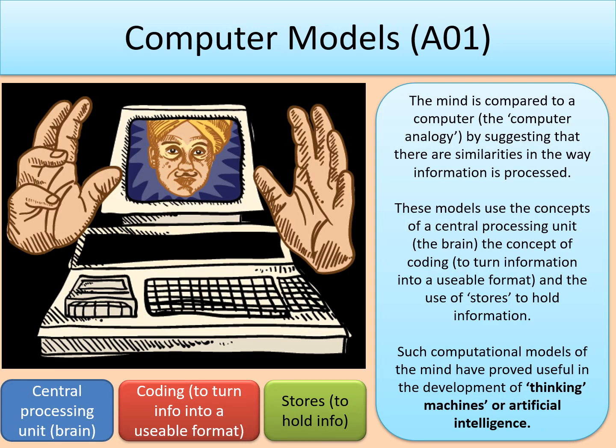Within the cognitive approach we also have computer models. This is the idea that the mind is compared to a computer — we call it the computer analogy — by suggesting there are similarities in the way information is processed. The models use the concepts of a central processing unit (the brain), coding to turn information into a useful format, and the use of stores to hold information. Such computational models of the mind have proved useful in the development of thinking machines and artificial intelligence.